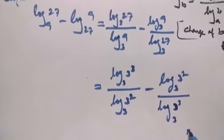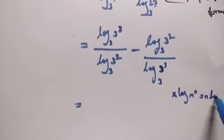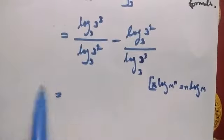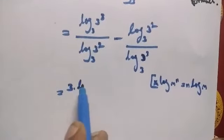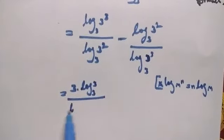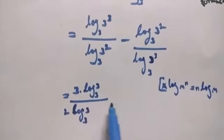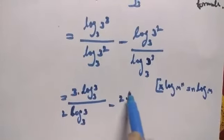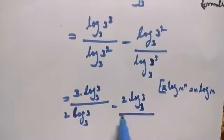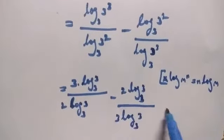Now applying the property log M to the power n equals n times log M: this becomes 3 log 3 to the base 3 divided by 2 log 3 to the base 3, minus 2 log 3 to the base 3 divided by 3 log 3 to the base 3.